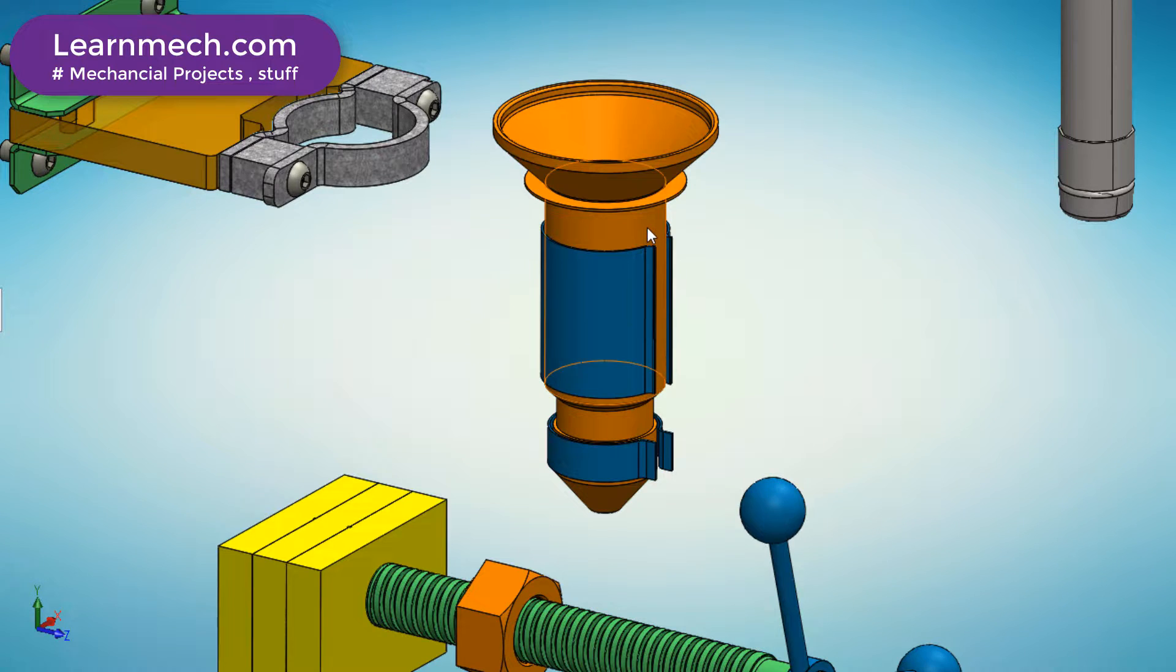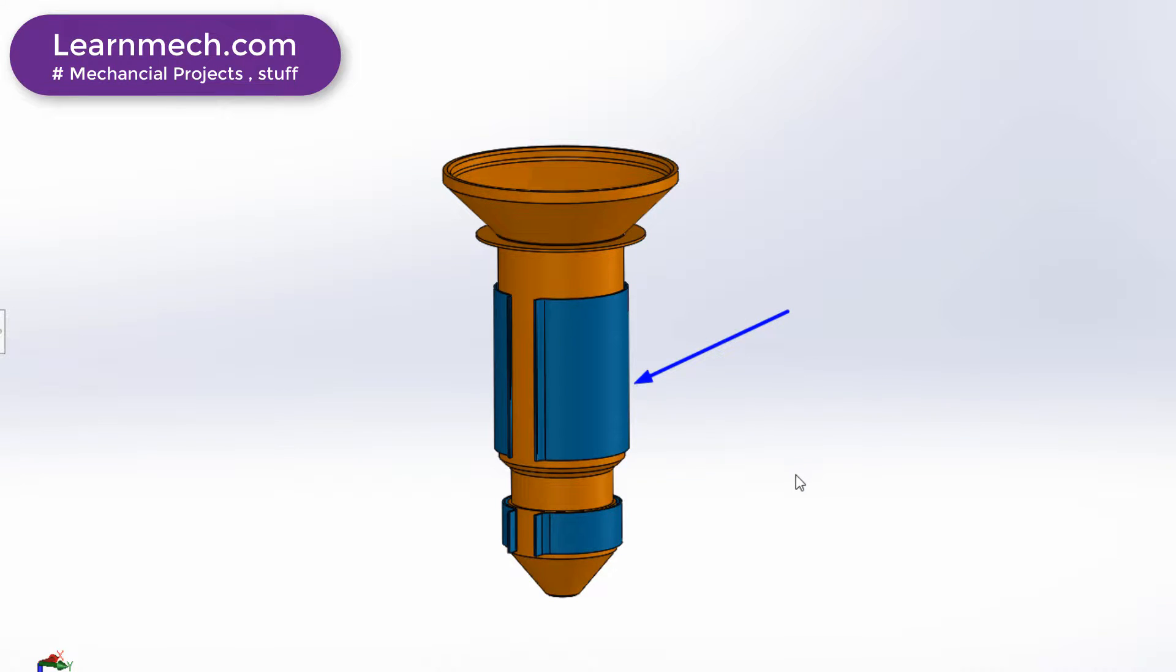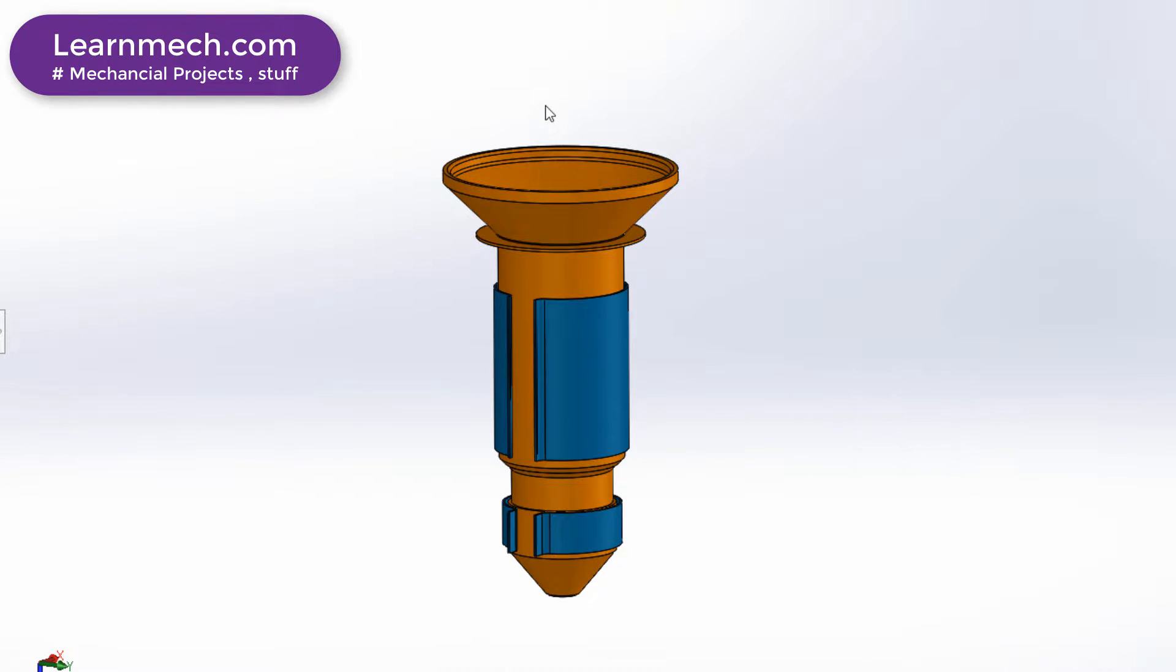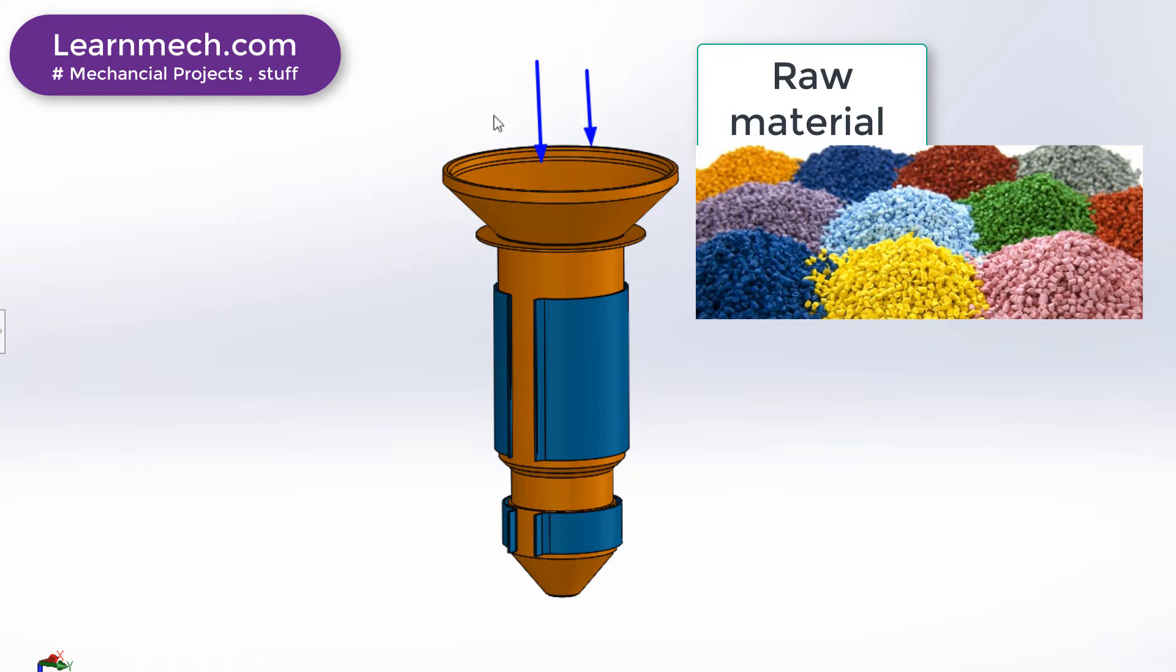On the lower part of the cylinder, a nozzle is fitted. The nozzle has external V-thread. Heating coils are an electrical heating instrument. A cup or hopper is on the top of the cylinder.